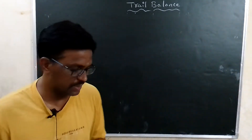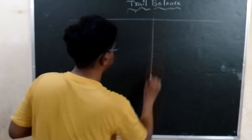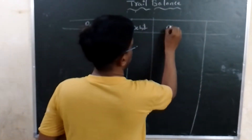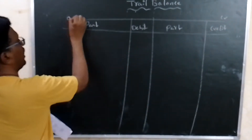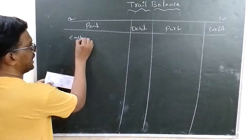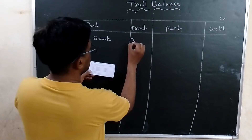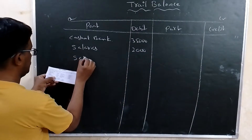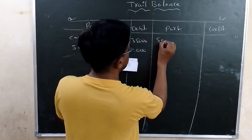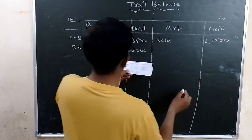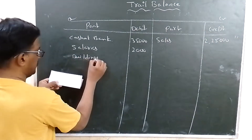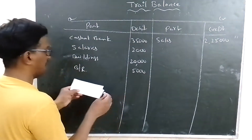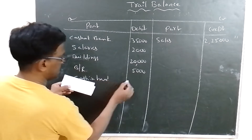In the trial balance solution: cash at bank is an asset — debit side, 35,000. Salaries is an expense — debit side, 2,000. Sales is income — credit side, 2,25,000. Building is an asset — debit side, 20,000. Bills receivable is an asset — debit side, 5,000. Cash in hand is an asset — debit side, 10,000.